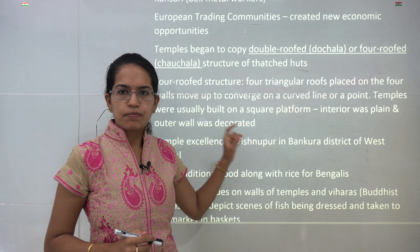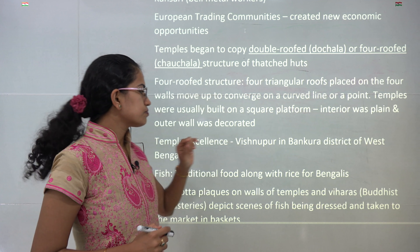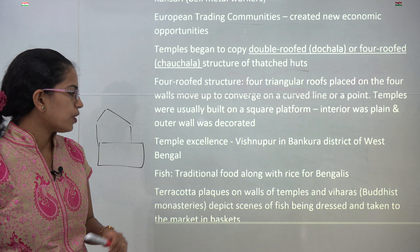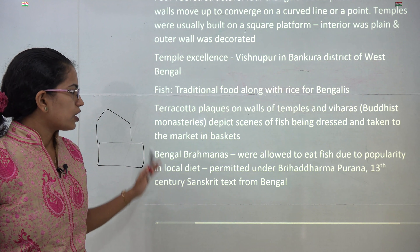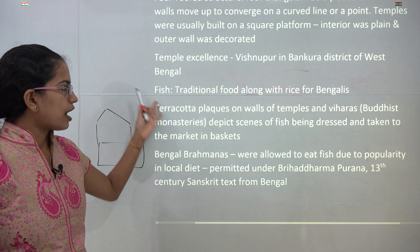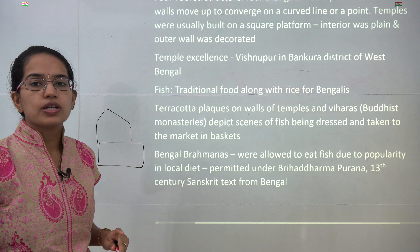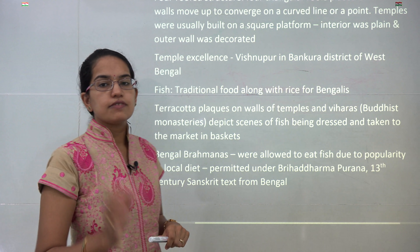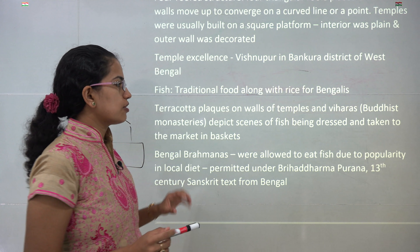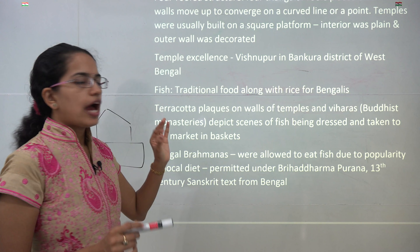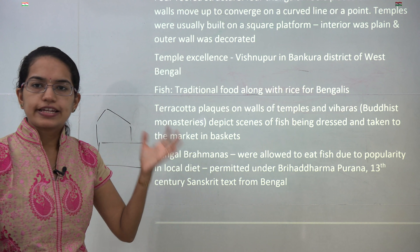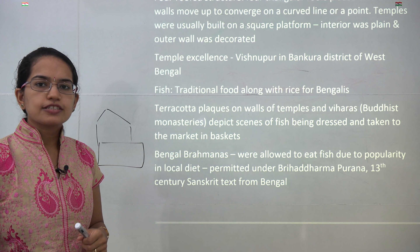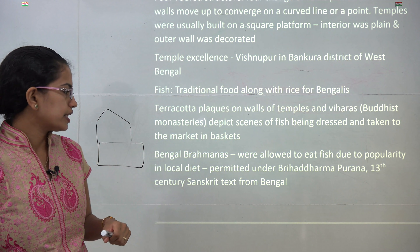One excellent example of temple architecture comes from Vishnupur in Bankura district of West Bengal. Many of the temples even had the decoration of fish and people carrying fish baskets in the paintings on the outer edges, showing how important fish was for Bengalis.